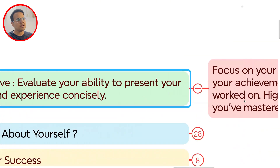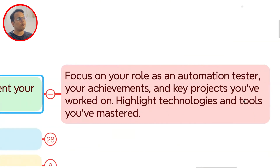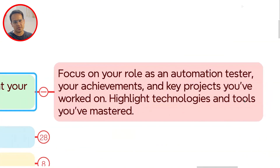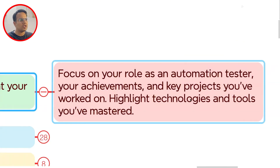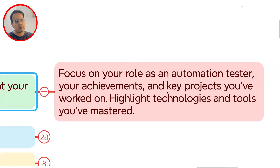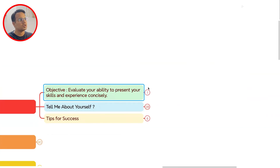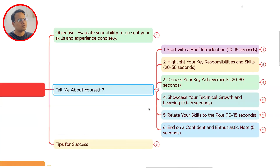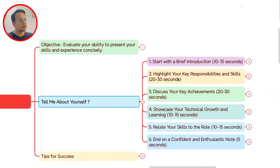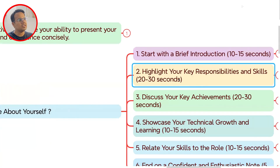In this particular case, you have to focus on your role as an automation tester — what you have achieved, key projects you have worked on, highlights of the technologies you have worked with, and tools you have mastered. With that, let's see how you are going to structure the answer for 'Tell me about yourself.' You have to keep six things in mind.